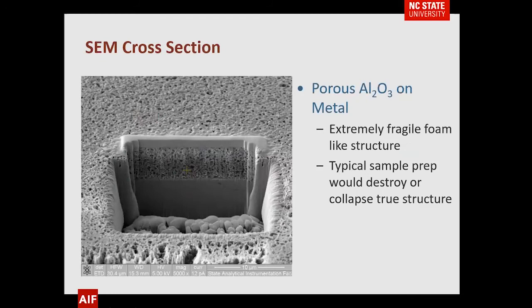This gives you an idea of what something like that provides. The frosting you're seeing is redeposition, which occurs because ions hitting here deposit some material there. There is a protective platinum layer. In this case we're looking at a porous alumina on metal — it's very fragile and if you tried to analyze it with normal polishing you would destroy it. From this you can tell how thick the layer is, that it's porous, and that the porosity is fairly similar from top to bottom.